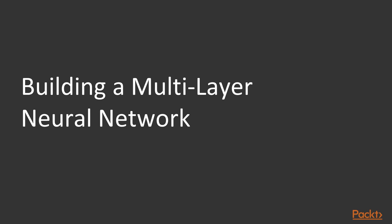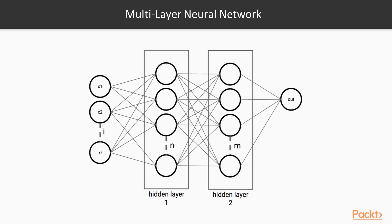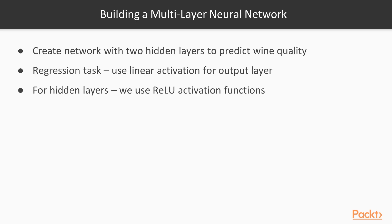Moving on, let's build a multilayer neural network. We will extend the number of hidden layers from one to multiple layers. Adding additional layers increases the power of a network to learn complex non-linear patterns. By adding an additional layer, the number of connections — also called trainable parameters — increases exponentially. Now, we will create a network with two hidden layers to predict wine quality. This is a regression task, so we'll use a linear activation for the output layer and ReLU activation functions for the hidden layers.